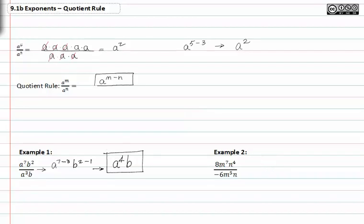In example two, we have leading coefficients that are numbers. So we treat them as if they were fractions and rewrite them in their reduced form. Eight and negative six have a two in common, so when we reduce them we get negative four-thirds.